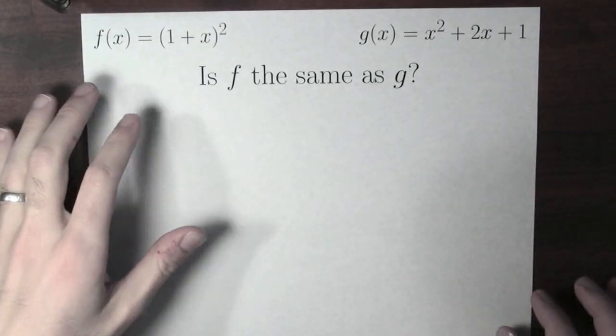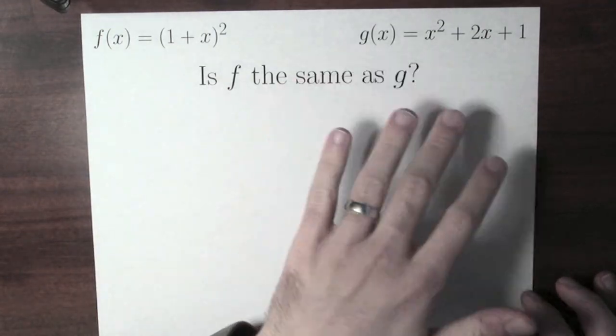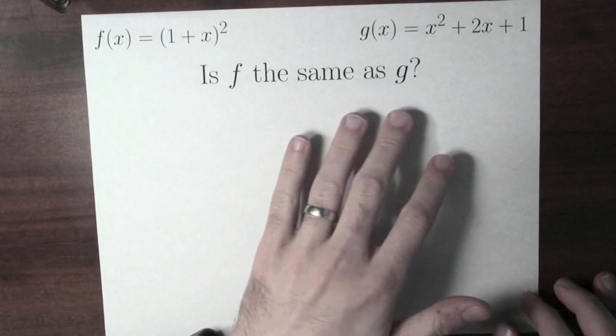For instance, here's two functions. f of x equals (1 + x) squared. g of x equals x squared plus 2x plus 1. Are these the same function?